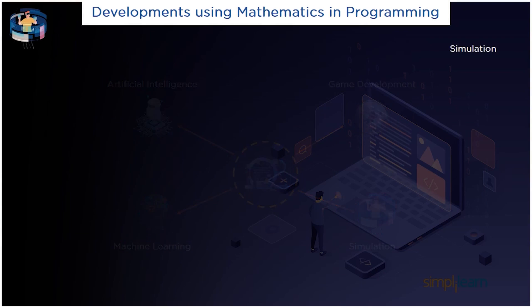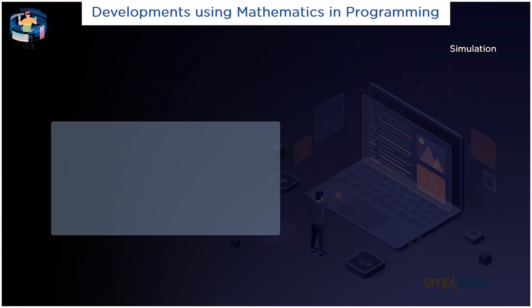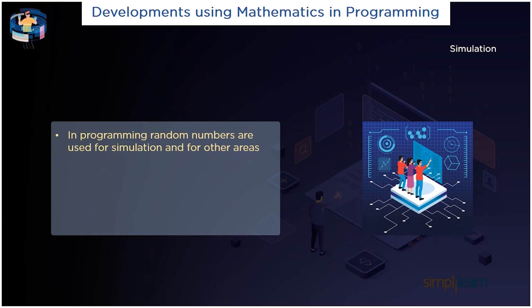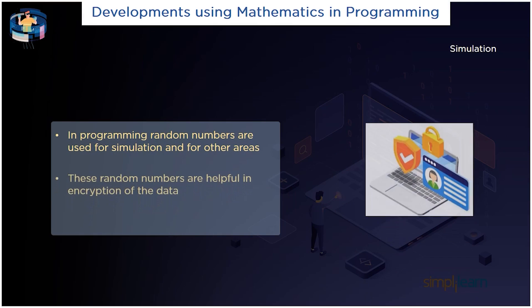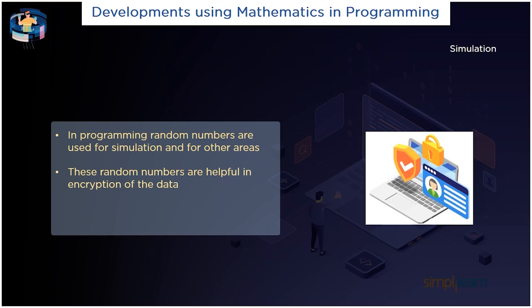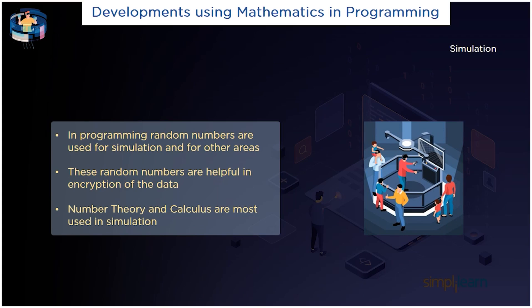The final one in the list is simulation. In programming, random numbers are used for simulation and for other areas. The random numbers in simulation are helpful in the encryption of the data. Number theory and calculus are mostly used in simulation.